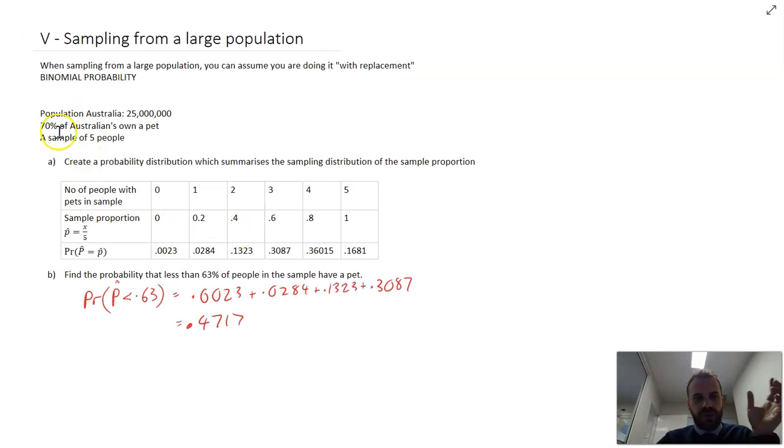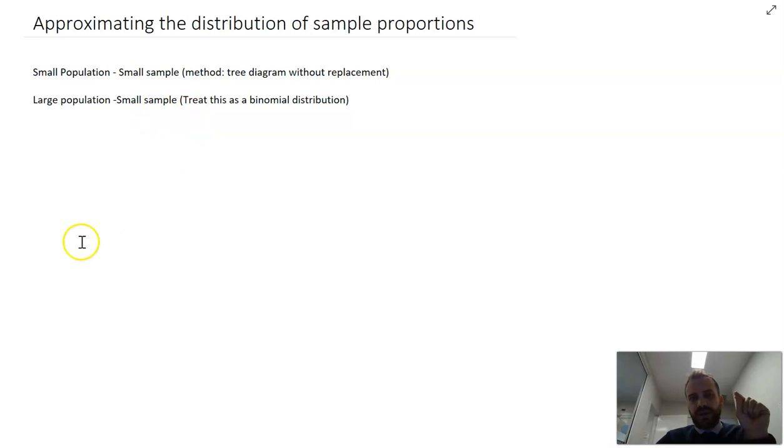And this is an example that I've done before on a large population, small sample. 25 million people, 5 people, and then figure out the distribution of people who have a pet. So we're going to treat that as a binomial distribution, but what about this next type of sampling?